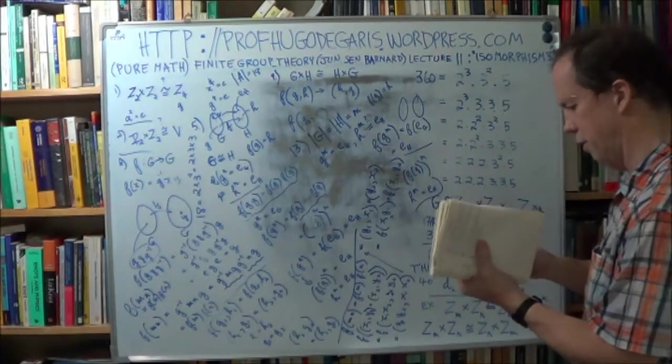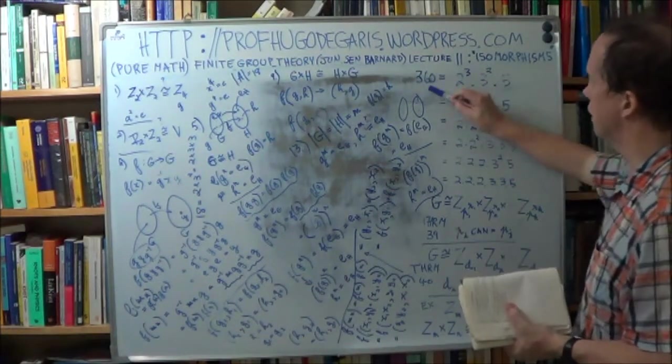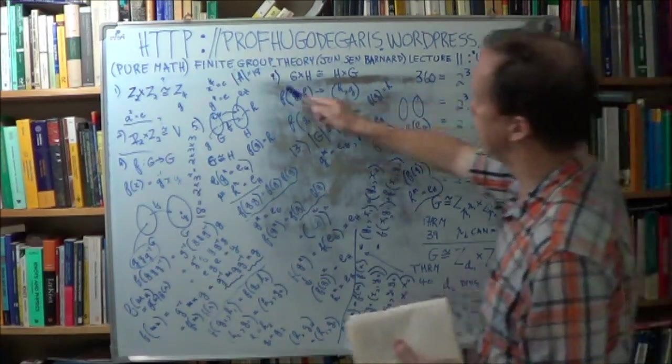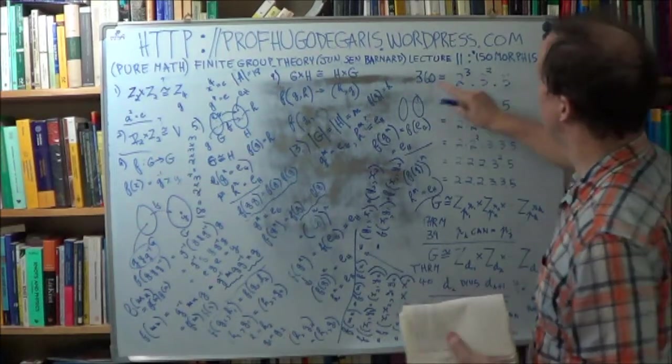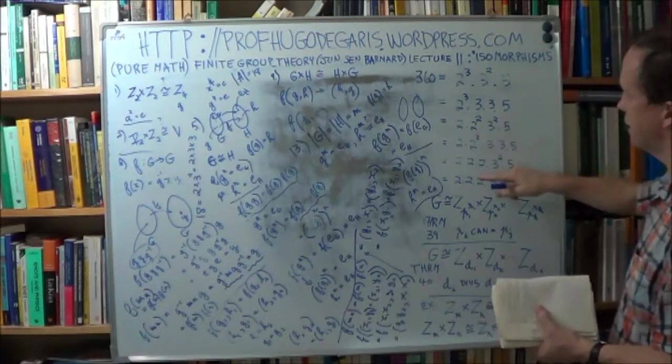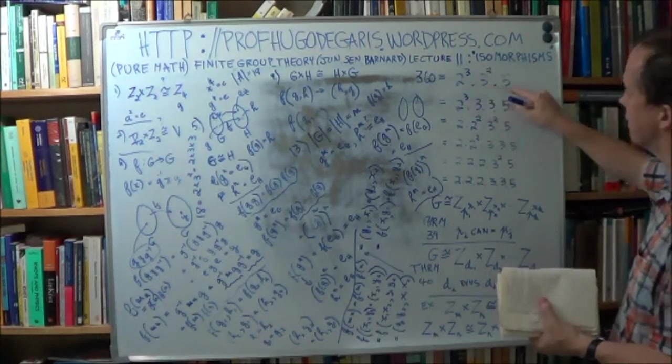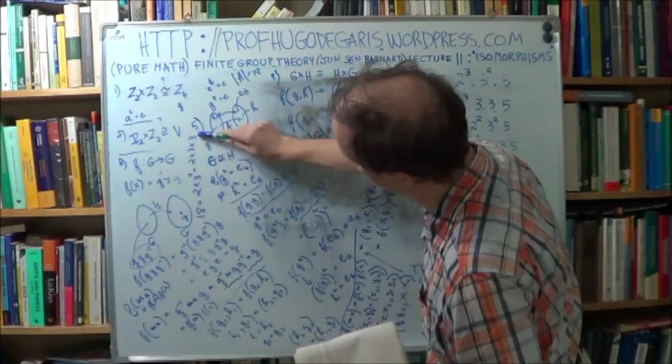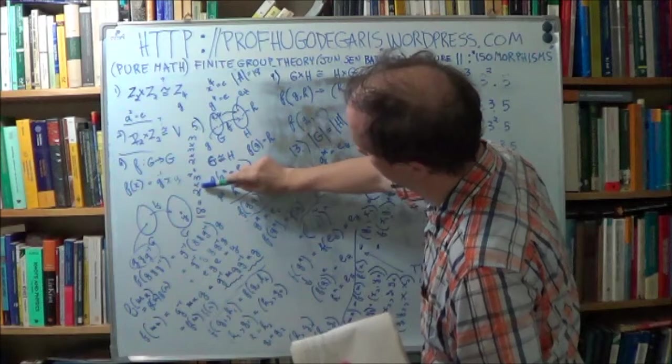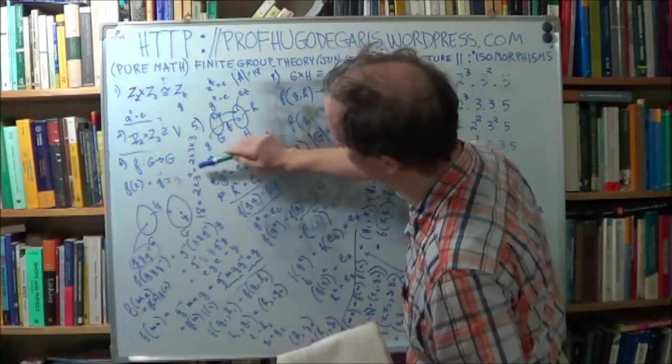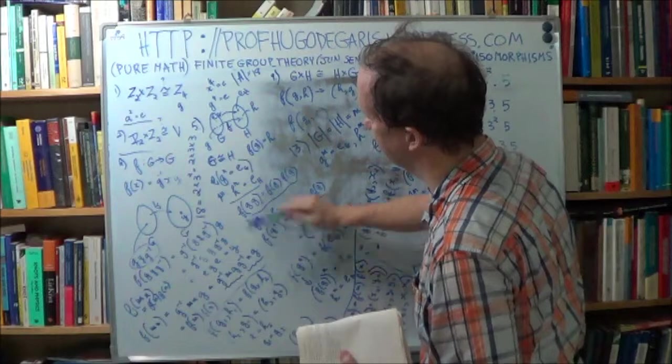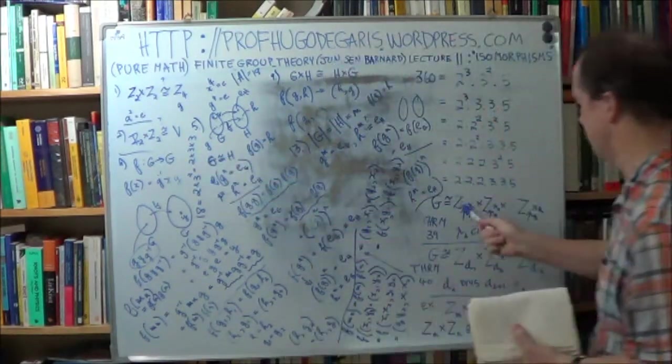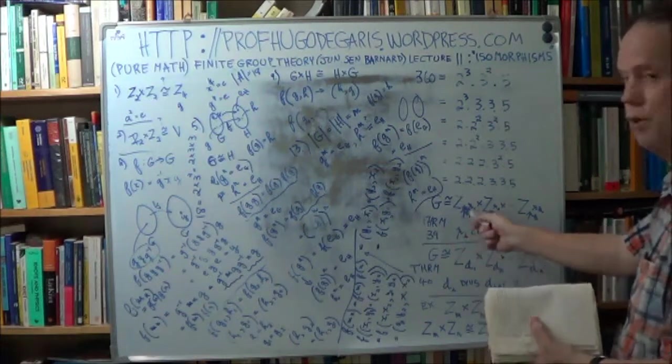Now, if you remember from theorem 39, you take the order of your group. Now, here was 360, a bit more complicated. Here, it's only 18. And you write out all possible expansions of factors and factors to powers. So here you only have 2 cases. So it's 2 by 3 squared, 2 by 9. These are the factors. Or 2 by 3 by 3. This is just shorthand for this kind of thing. This is what theorem 39 says.